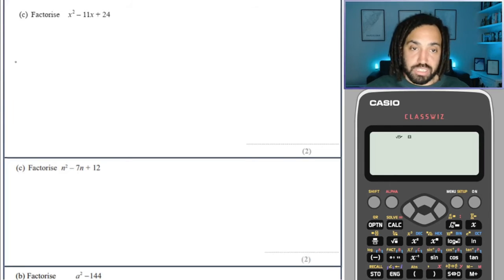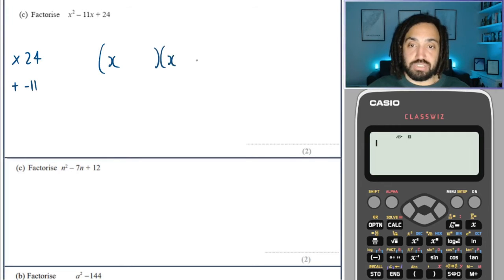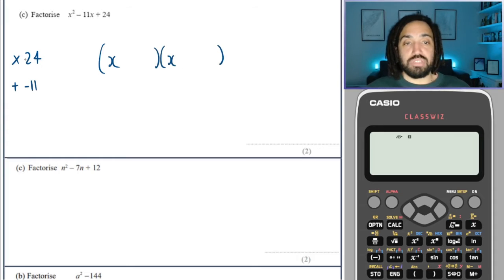Okay. Once again, we need to times to make 24 and add to make minus 11. So X and X, because they times need to make a positive, they must either be both positive or both negative. And because they need to add to make a negative, they must both be negative.